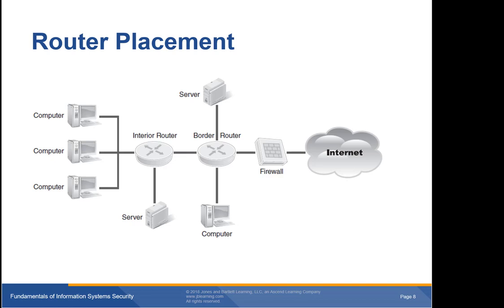Packet filtering is a function of a router or firewall. Each time the router or firewall receives a data packet, it compares the packet to a list of rules configured by the network administrator. If no rule specifically allows the packet, the firewall blocks it. NAT and packet filtering are two good ways to use your routers to help defend your network, but no single technology is a silver bullet. You should still use firewalls and other security technologies.